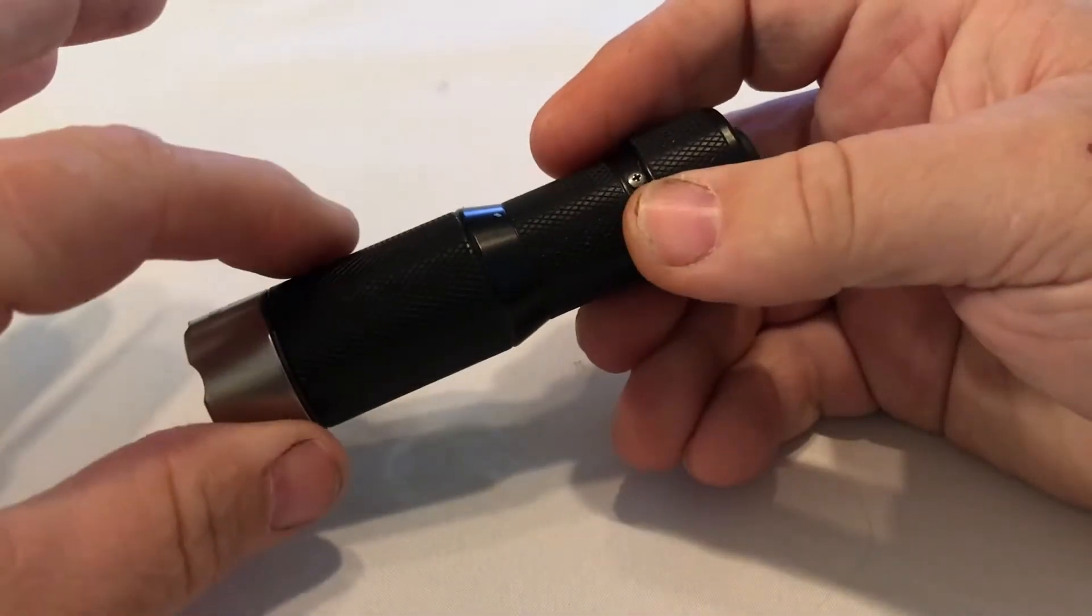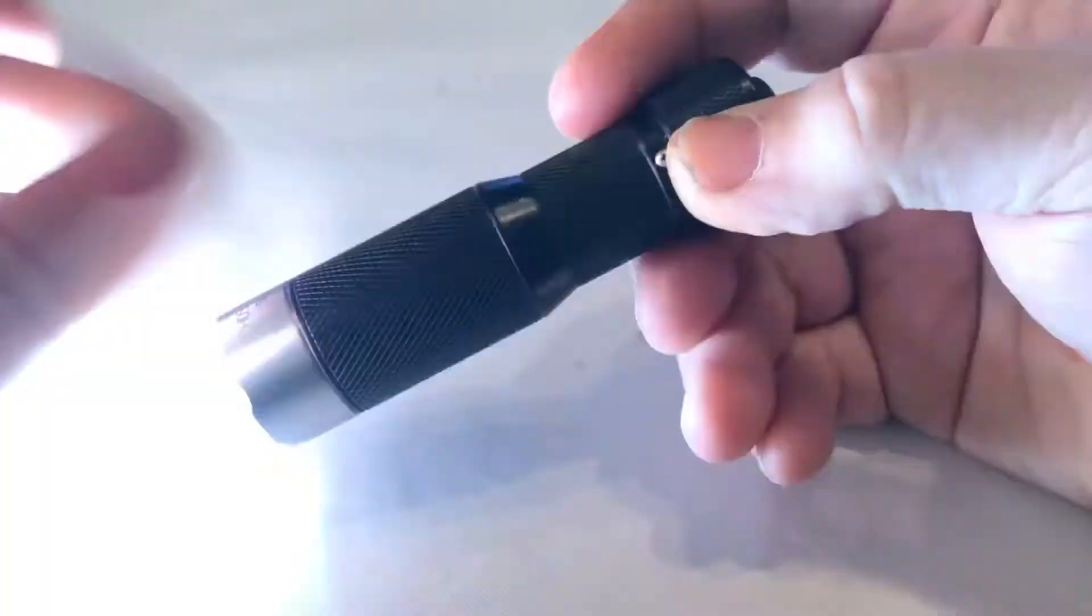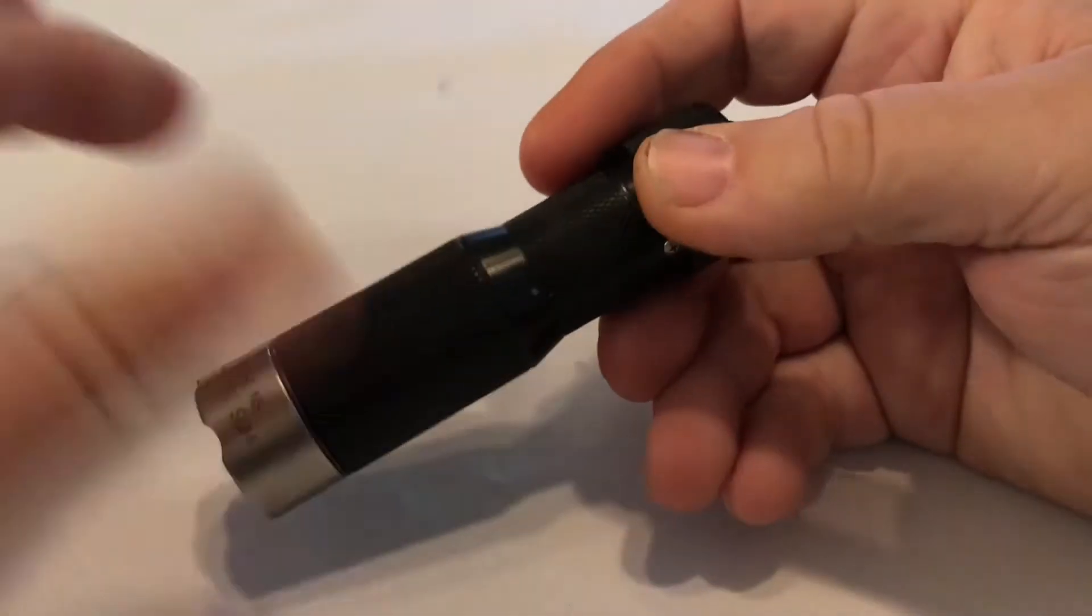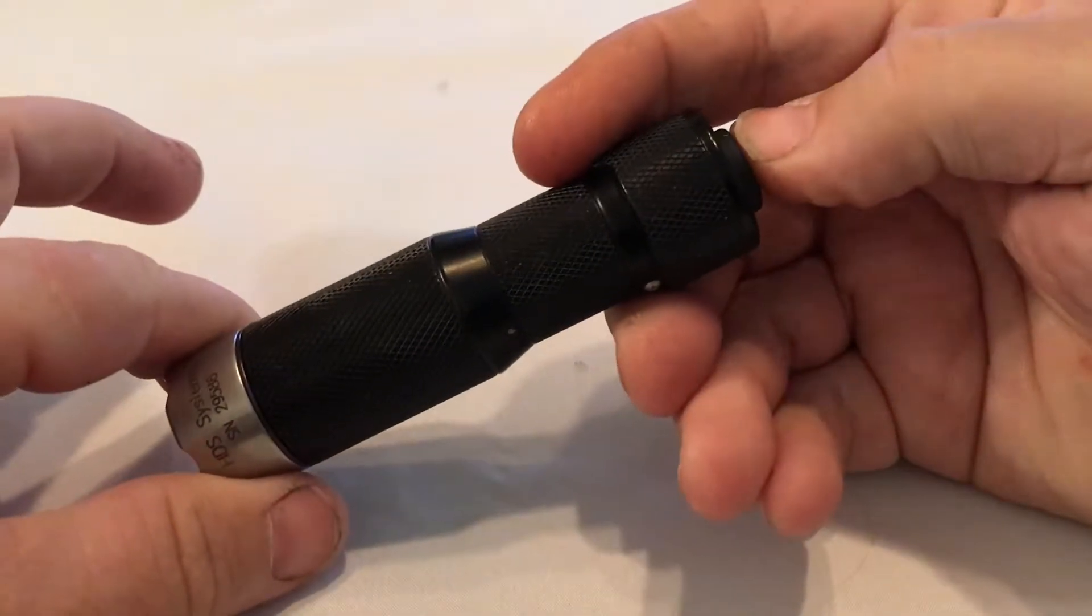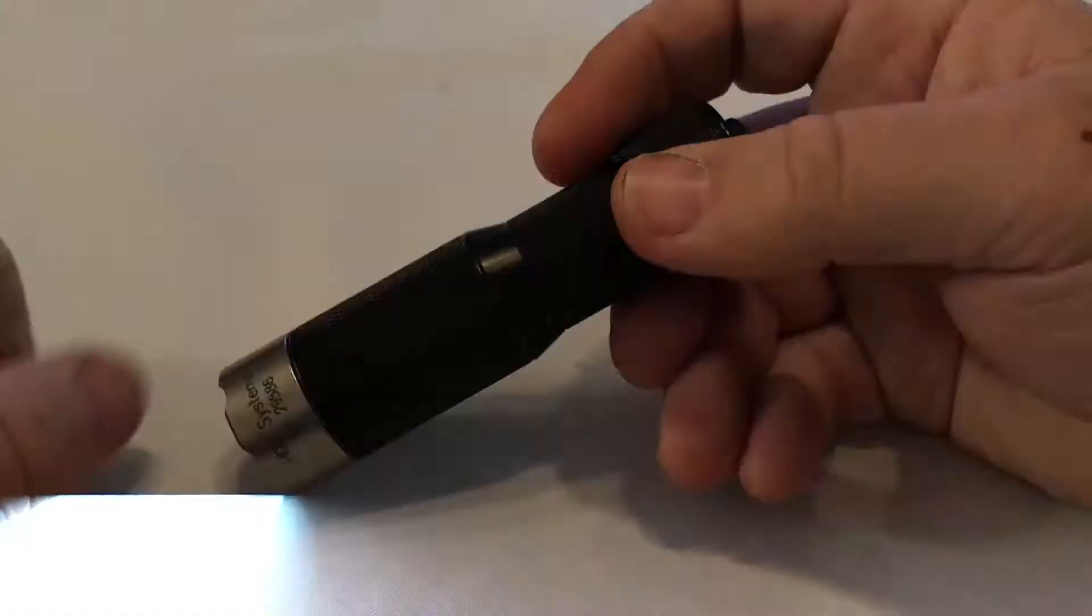Now, I changed this light so that preset D was a tactical strobe. So, we turn it on. 1, 2, 3. We're in tactical strobe. I turn it off. If I turn it on again, it's going to come back into mode D, which I've set up as the tactical strobe.